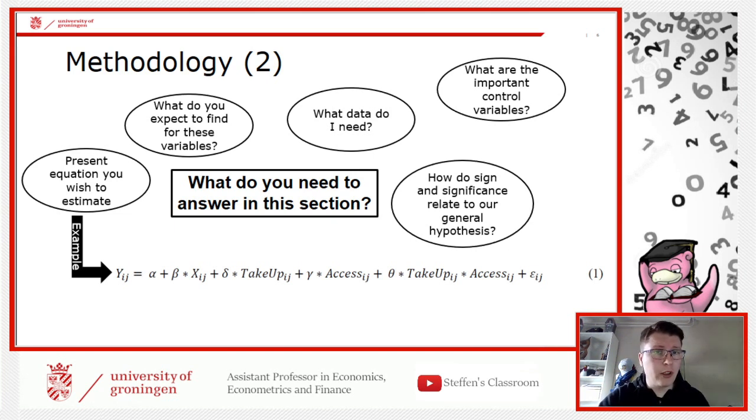Explain all the things you expect to find, or what does it mean if you find it. And how does the significance of these terms here relate to your general hypothesis? In my case here, the most important parameter was the theta parameter attached to the interaction term, from which I would have to explain what does that actually mean if that turns out positive or negative.